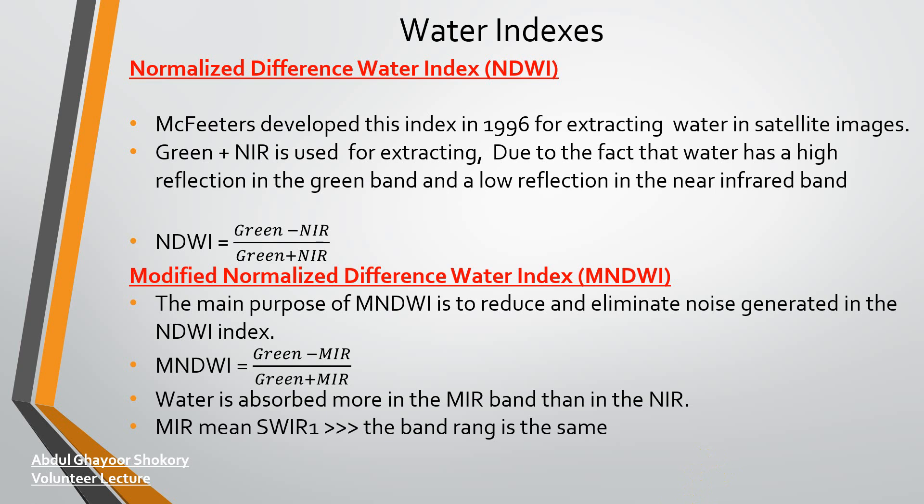The second index is MNDWI — the Modified Normalized Difference Water Index. We use this index because it reduces and eliminates the noise generated in the NDWI index. The formula is: green minus SWIR (short-wave infrared) divided by green plus SWIR.